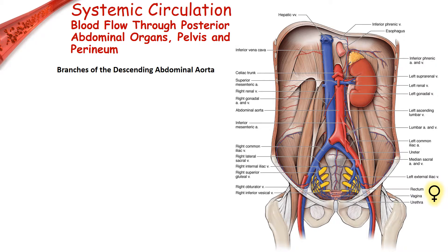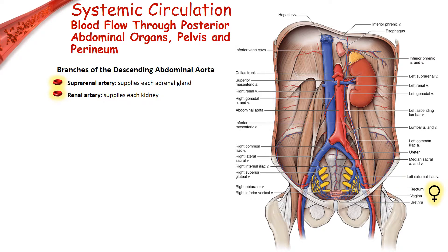Three other paired arterial branches emerge from the sides of the descending abdominal aorta: the middle suprarenal artery, which supplies each adrenal gland; the renal artery, supplying each kidney; and the gonadal artery, supplying each gonad — the testes in males and the ovaries in females.